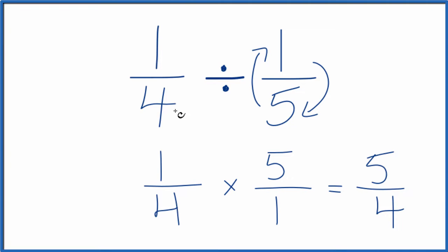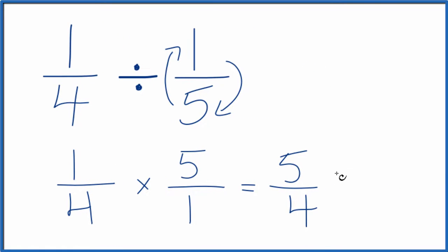So when we divide 1/4 by 1/5, we get 5/4. This is an improper fraction. If you want to simplify this to a mixed number, 4 goes into 5 one time with 1 left over. So 1 and 1/4, that's the same as 5/4.